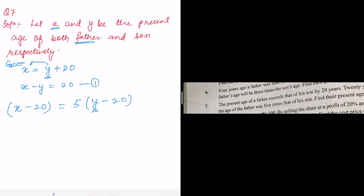y is the present age of the son, so 20 years ago the son's age is y minus 20. So x minus 20 equals 5 into (y minus 20), which gives x minus 20 = 5y minus 100. Rearranging, x minus 5y equals minus 80. This is equation number two.